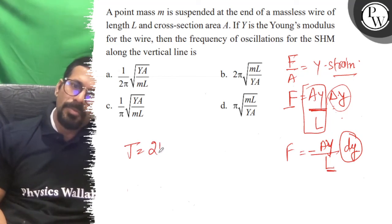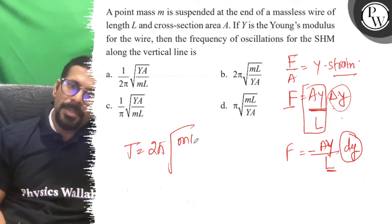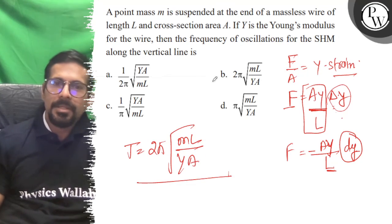So time period is equal to 2π root of m by K, so mL by YA is the correct answer and the option is correct, all the best.